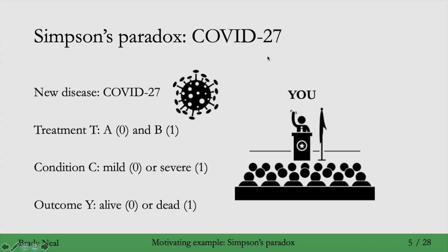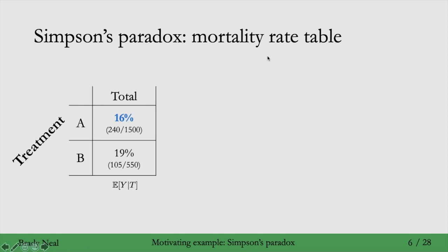And then finally there's the outcome: your patients will either be alive or dead. We're only looking at binary variables here, but in general in causal inference you can extend analysis from binary variables to continuous variables or multiple outcomes. Here is what your data looks like at the treatment level. Among people who were given treatment A, 16% of them died — that's 240 people out of 1,500. And then among people who got treatment B, 19% of them died. So just looking at this, it seems like treatment A is doing a bit better than treatment B — about 3% fewer people die.